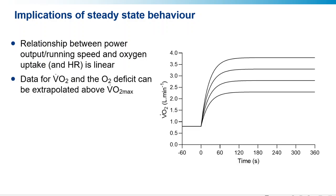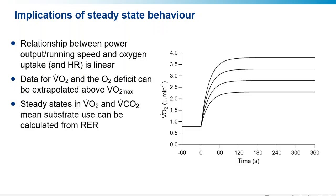We can use that linearity to extrapolate as well. So we can take the VO2 data and the oxygen deficit, and we can predict what would happen if we were exercising above the VO2 max. And this is the basis of the maximal accumulated oxygen deficit test and the estimation of anaerobic capacity. We can also assume steady states in VO2 and VCO2, and from that we can calculate substrate utilization by using the respiratory exchange ratio, VCO2 divided by VO2.